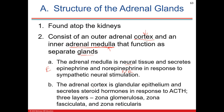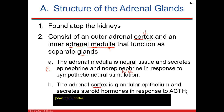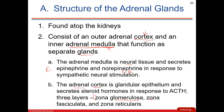Here's some memorization: the cortex has three layers or zones, listed from outer to inner. The zona glomerulosa is the outermost. The zona fasciculata is the middle and largest zone. And the zona reticularis is the innermost.